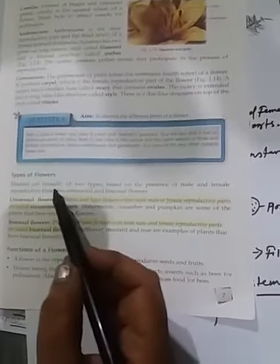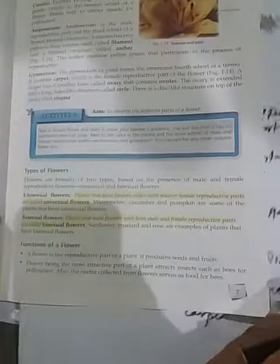Types of flowers. Flowers are broadly of two types: unisexual flower and bisexual flower.